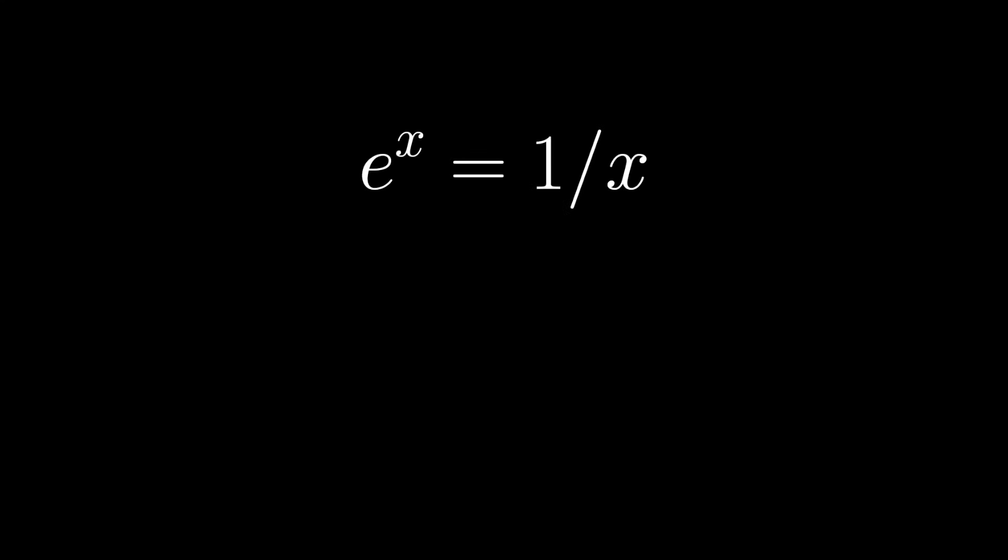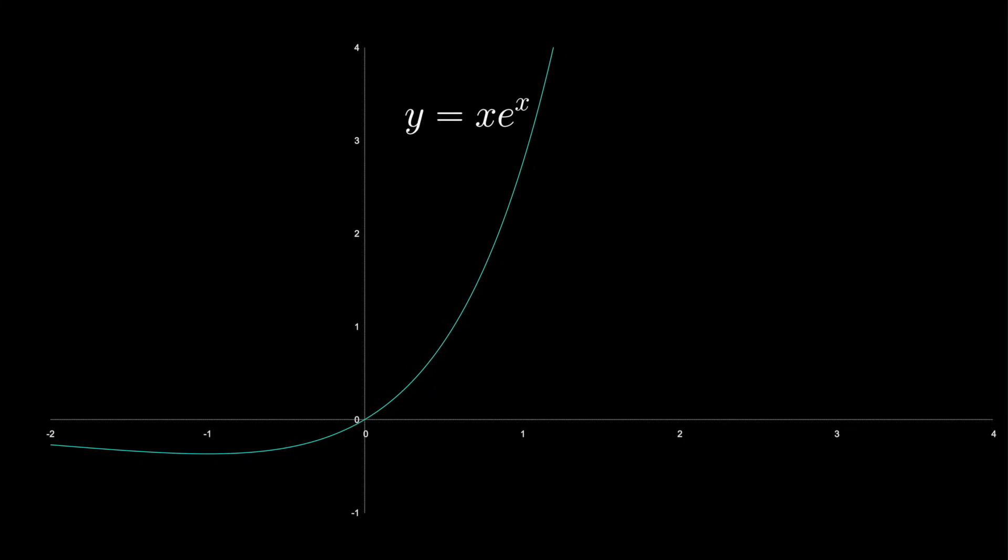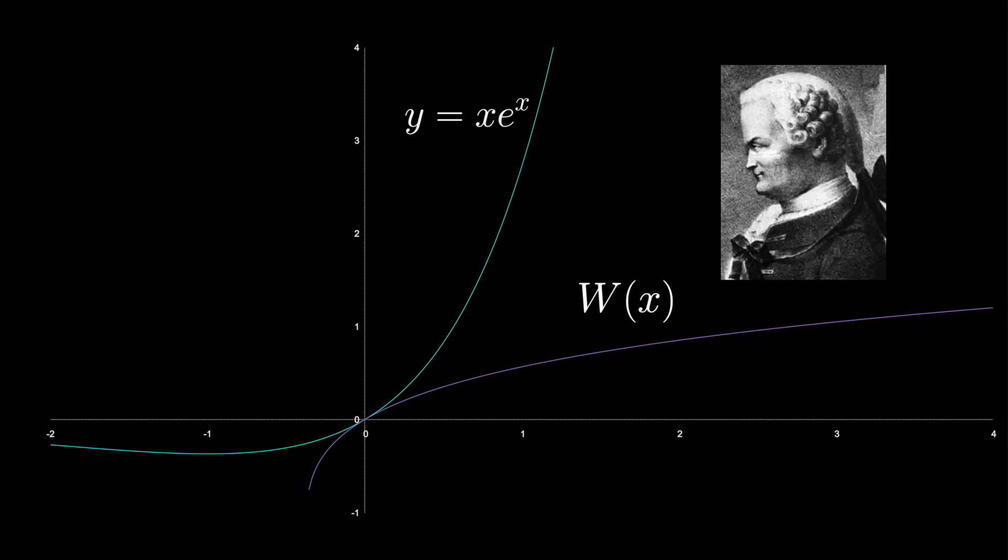Let's take our original equation and generalize it. So instead of 1 over x, it's any number y over x. Shifting things around, we get the function y equals x times e to the x. We can graph this. So all we need to do is flip this function over to get its inverse. This inverse function from x equals minus 1 over e out to infinity is the Lambert W function, named for Johann Lambert.